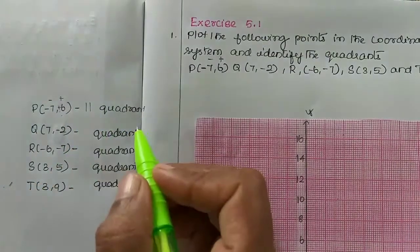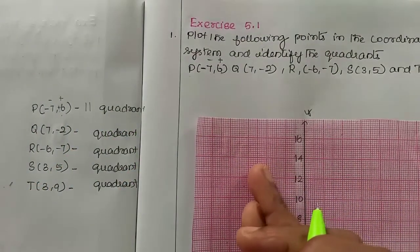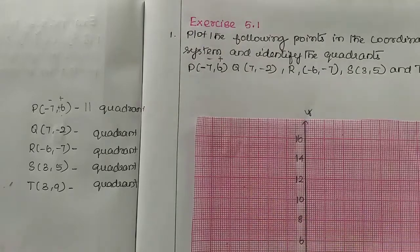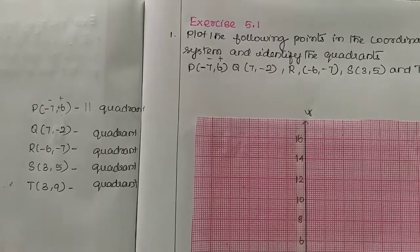First quadrant: plus, plus. Second quadrant: minus, plus. Third quadrant: minus, minus. And fourth quadrant: plus, minus.